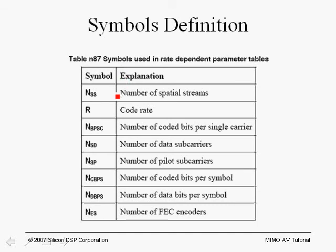Here are some of the symbol definitions. NSS is the number of spatial streams — for example, 2. R is the coding rate. NSBPSC is the number of coded bits per single carrier. NSD is the number of data subcarriers. NSP is the number of pilot carriers. And as an OFDM system, we have the number of coded bits per symbol and the number of data bits per symbol.